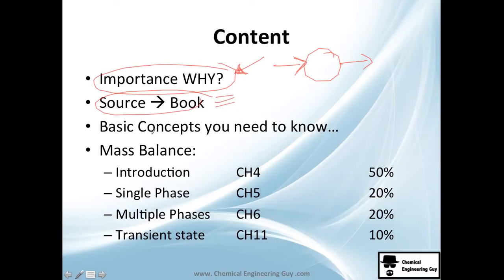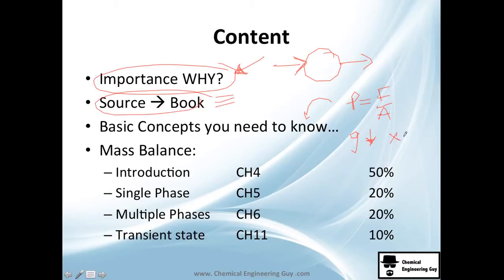Then we're going to see the sources — which book I'm basing my course on and other books you might also like. Then we go to the basic concepts you need to know, like multiplication, differentiation, and some basic concepts in chemistry and physics. I'm not going to explain how pressure is derived, how gravity works — those are basic concepts you already know or should know. We'll also see the introduction, which is the first step to understand what a mass balance is and how it works, including different units — that's chapter four of the book.